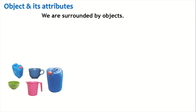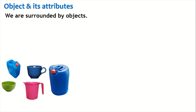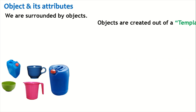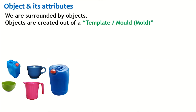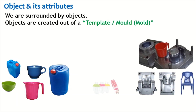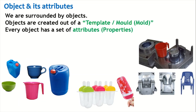To get answers for these questions, we need to understand objects and their attributes. We are surrounded by objects — a barrel, a mug, a bowl, a cup. Most objects are created out of a template or a mold. Through that mold we can create many similar objects, and every object has a set of attributes.